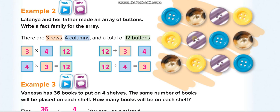Let's look at another example to understand better. Again, how many rows? One, two, three — three rows. How many columns? One, two, three, four — four columns. So three times four equals twelve, or four times three equals twelve. For division, starting from the total: twelve divided by four equals three, and twelve divided by three equals four.